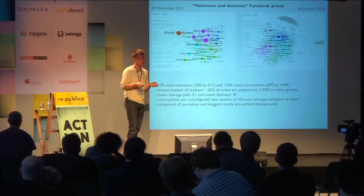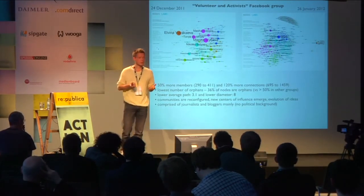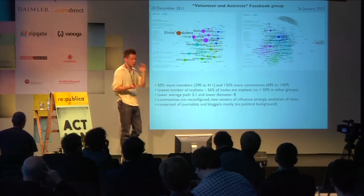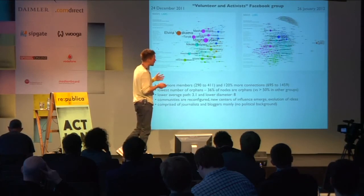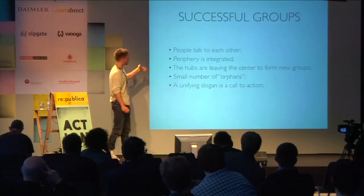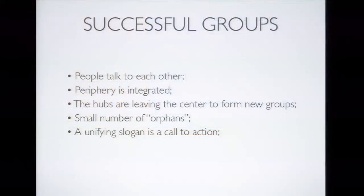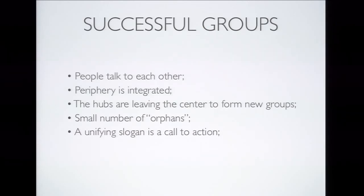The political change didn't really happen, but what did happen is that people — for the first time in Russia — got a taste for actively participating in very practical and important processes: observing elections and being active in this field. So successful groups are the ones where people talk to each other, where the periphery is integrated, where hubs are leaving the center to form new groups, where a small number of orphans or disconnected people exist, and where the unifying slogan is not something political and abstract, but more a call to action — so people are constantly reminded about the purpose that brings them together.